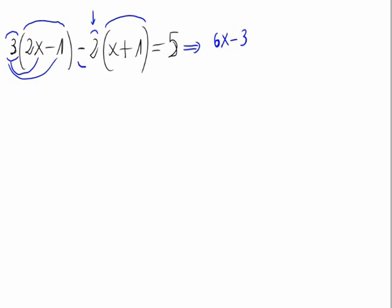Now, instead of doing just 2 times the parentheses, we are going to multiply minus 2 times the parentheses. So it's minus 2 times x, which is minus 2x, and minus 2 times 1 is minus 2. And this is equal to 5.